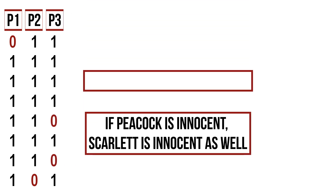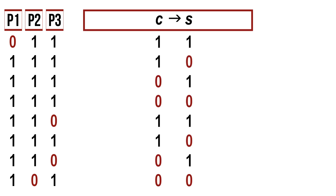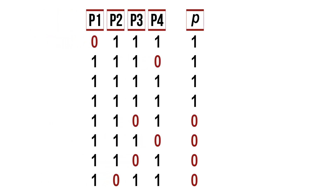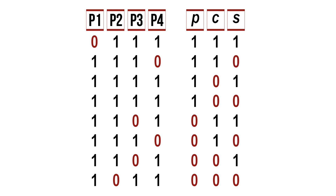The fourth and final premise is: if Peacock is innocent, then Scarlet is innocent. We translate this into propositional logic and evaluate the formula under the main connective in all situations, using the same truth value order as before. We have now evaluated all four premises for all possible situations. The conclusions to test are p for Plum is innocent, c for Peacock is innocent, and s for Scarlet is innocent. We eliminate all situations where at least one premise is false. In every situation where the premises are true, the statement 'Plum is innocent' is true.